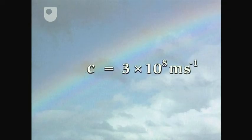As for all waves, the frequency multiplied by the wavelength is the speed of the wave, which for light has a value of 3 times 10 to the power 8 metres per second, and is given the special symbol C.